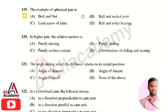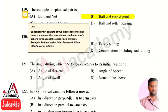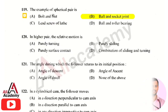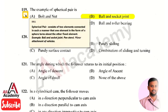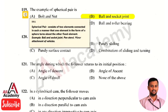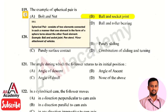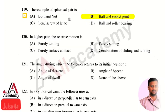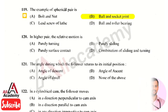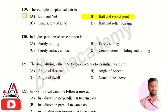An example of a spherical pair is the ball and socket joint. A spherical pair consists of two elements connected such that one element in the form of a sphere turns about the other fixed element. The best example of a spherical pair is the ball and socket joint.